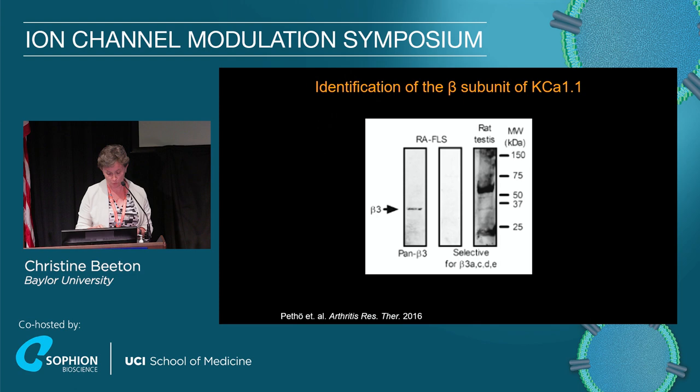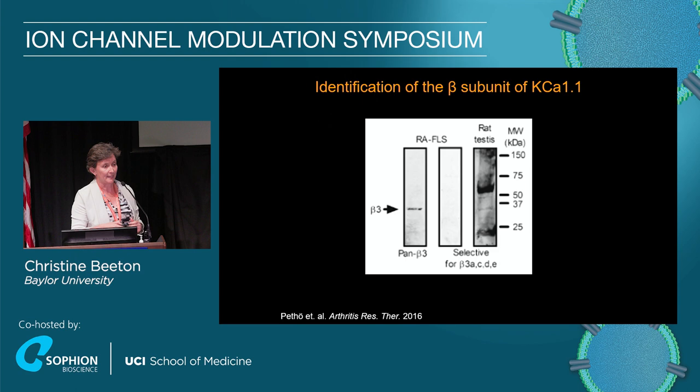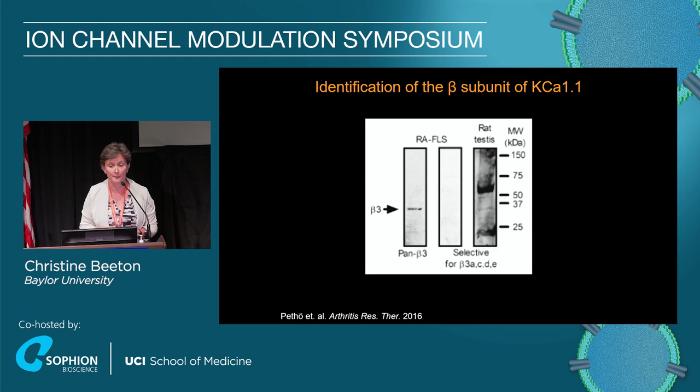To test that, we did a Western blot — and there we got lucky. There is a pan-beta-3 antibody and a selective antibody that binds the terminus of the subunit and recognizes everything except beta-3b. When we stained for that, we could see beta-3 staining in the aggressive cells and not in the others. So what we have is beta-3b.